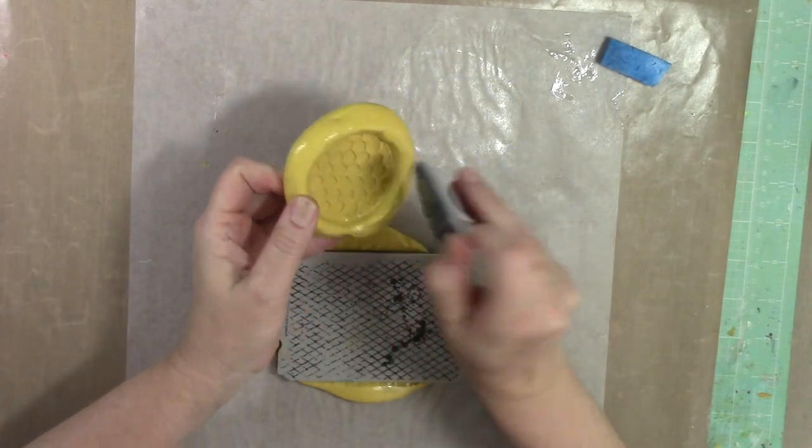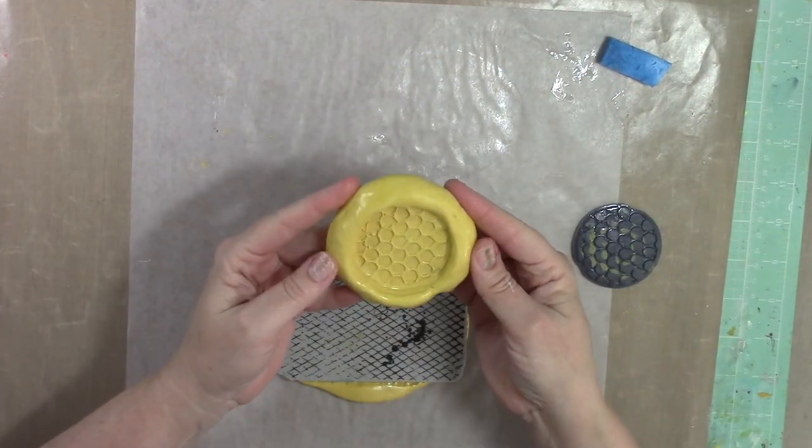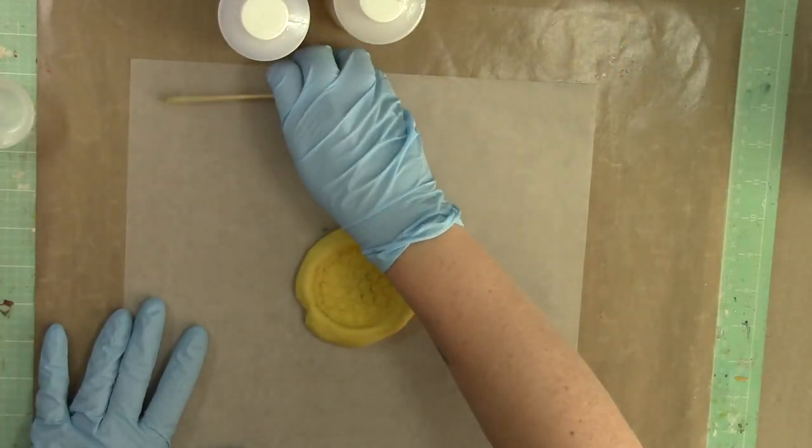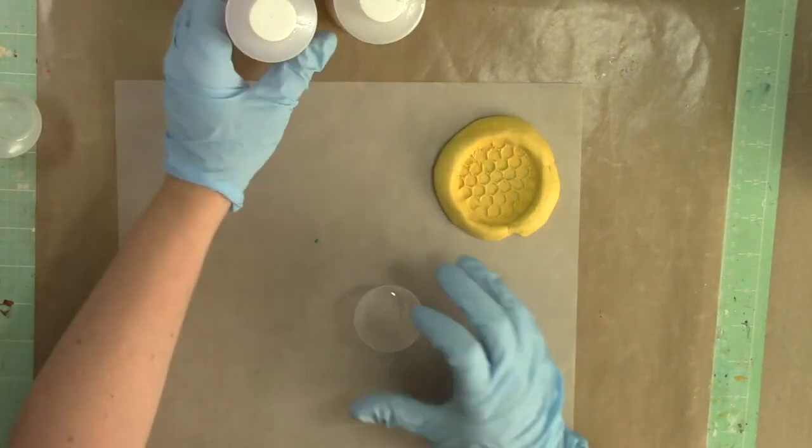So you can see I set it aside. And the mold is harder now. It's still flexible but hard. And you can see me taking out the stamp. Now I've got a mold.